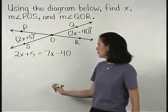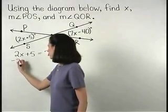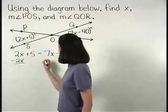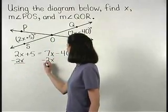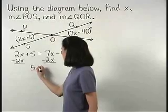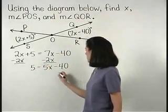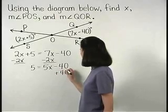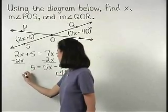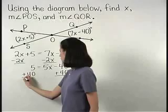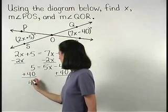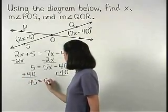Solving from here, we subtract 2x from both sides to get 5 equals 5x minus 40, and adding 40 to both sides, we have 45 equals 5x.